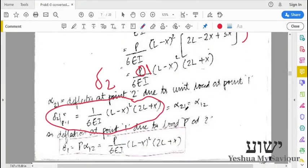So you can see that this is the same as the influence number at point 1 due to load at point 2. That is delta 1. The deflection at point 1 is p times delta 1, the same thing. So this concludes the solution.